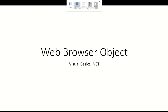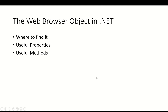Hi, it's Mr. Hem here. In this video I'd like to show you the web browser object in the .NET framework and show you some of the properties and methods it has. First I'll show you where to find it, then we'll look at some of the useful properties you need to know, and also some of the useful methods that would help if you want to do some kind of project involving web browsing.